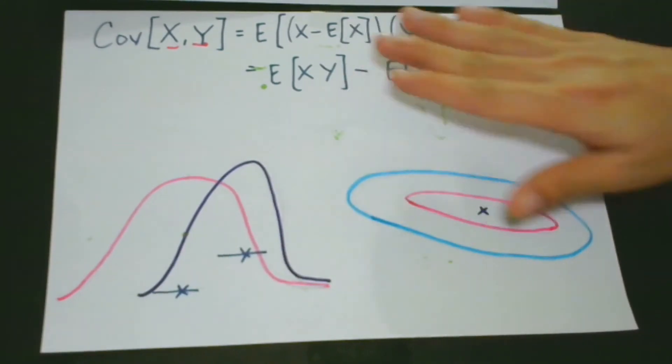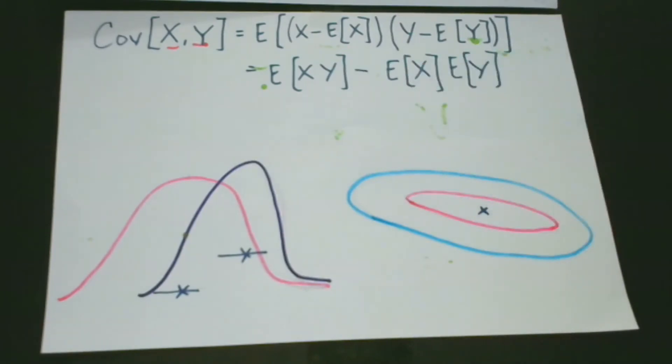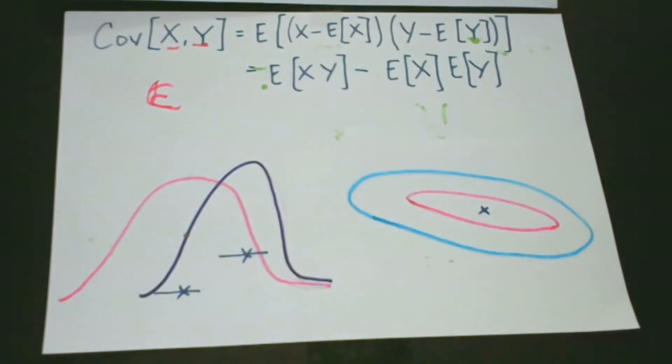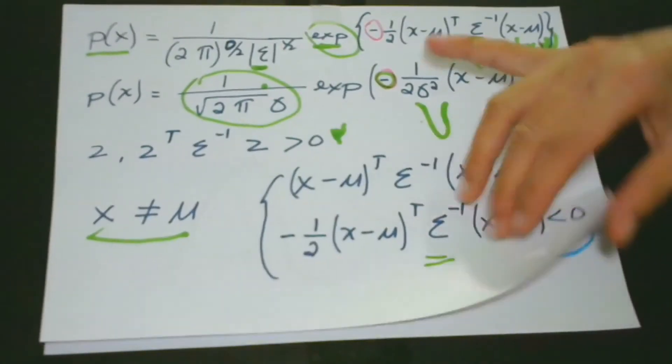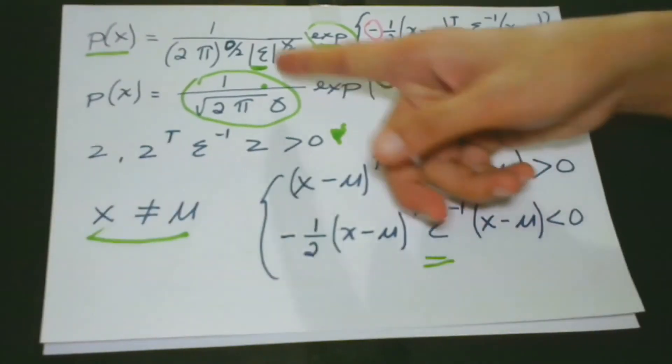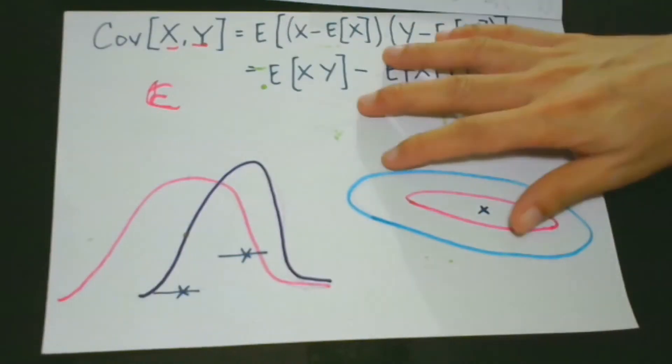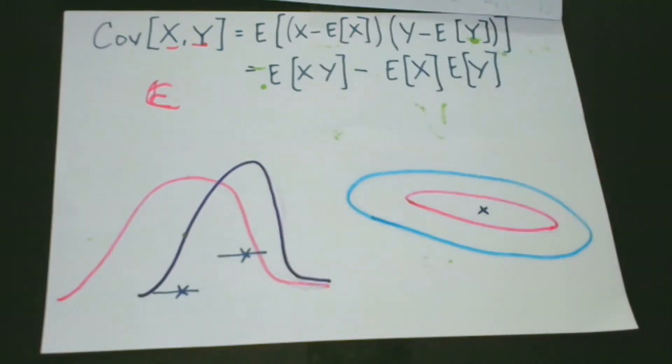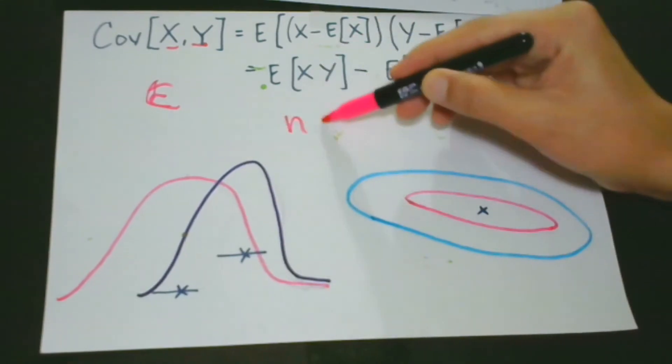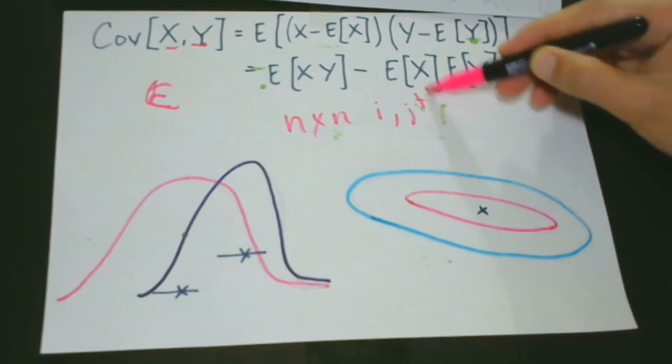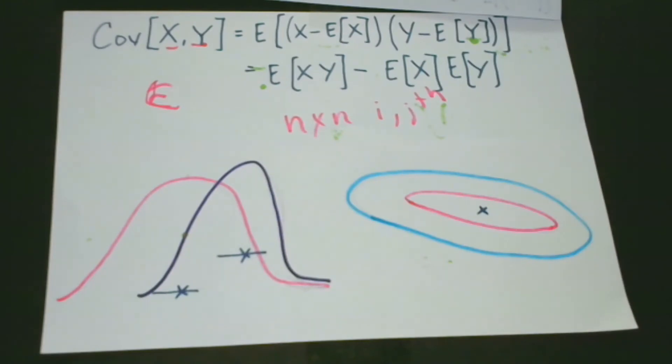The covariance matrix, which is denoted as Σ or sigma, remember in our case, I told you this one is a covariance matrix. This is the determinant. It is the n by n matrix whose i and jth entry is covariance x and y. Okay,